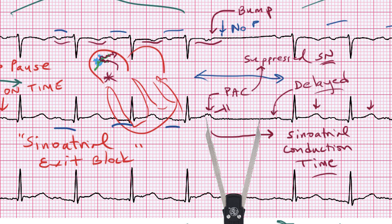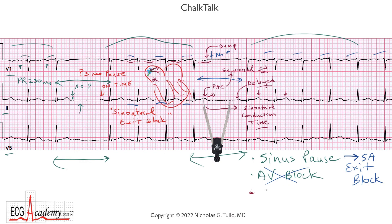What we're really dealing with is a blocked PAC resulting in a pause that resembles a sinus pause, but it's really not. The third possibility I conveniently left out is a non-conducted or blocked PAC — and that's what we have here. We have frequent PACs that are so early that the AV node fails to conduct them because it's refractory. Here it is again — you can see it's superimposed on the T wave, and because it's so early the AV node fails to conduct it. It's a very common arrhythmia. You really need to look for these P waves because if you don't look for them, you won't find them.